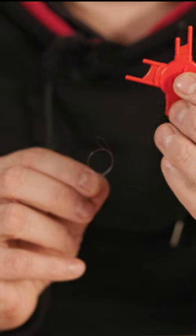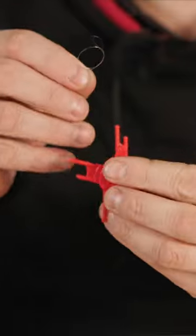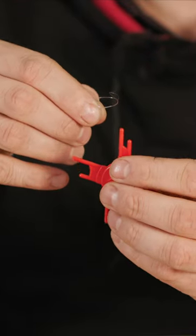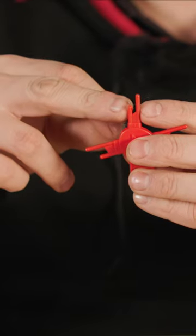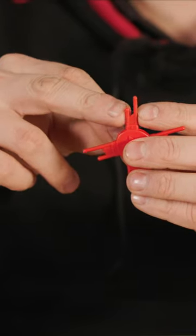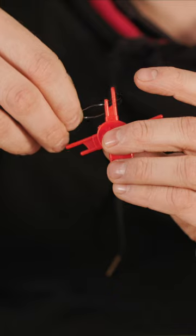Now on the loop sizer, always go for the smallest one. So first thing we're going to do is put the oval loop over the long prong and the perfect circle over the short one. That goes over there, that goes over there.